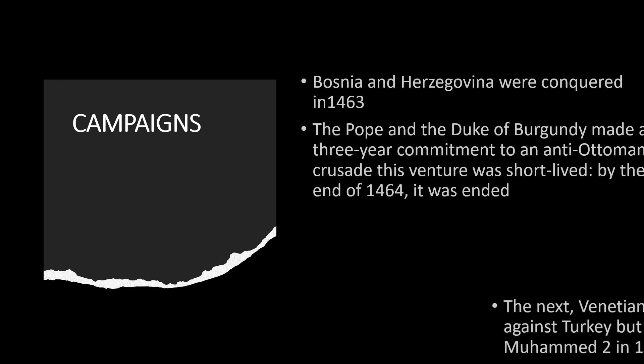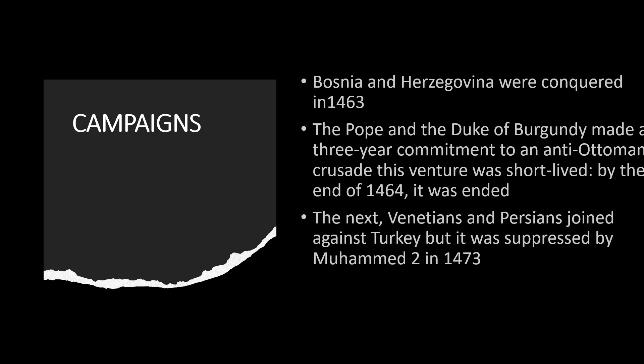After the failure of the crusade against the Ottoman Empire, Venetians and Persians started a new battle against the Ottomans. But this was also suppressed by Muhammad al-Fatih in 1473. During this period, he also conquered the large territory of Anatolia, starting the campaign in 1464 and completing the conquest of Anatolia by 1473, taking approximately 10 years.